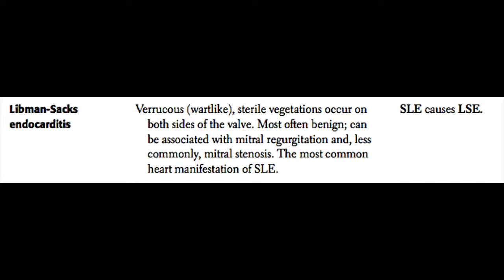Another type of endocarditis is called Libman-Sax endocarditis. It is commonly described as verrucous or wart-like sterile vegetations that can occur on both sides — both upstream and downstream — on the valve. Normally infectious endocarditis involves only the upstream face of the valve, the side the blood hits first, whereas Libman-Sax can affect both sides. Generally, Libman-Sax endocarditis is benign and can be associated with mitral regurgitation and less commonly mitral stenosis.